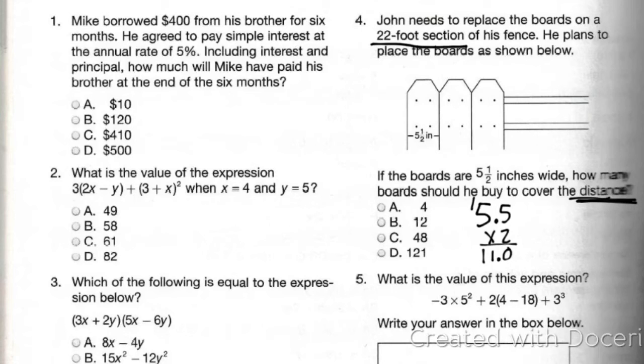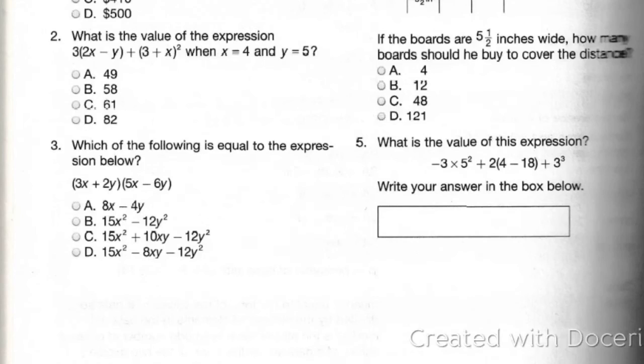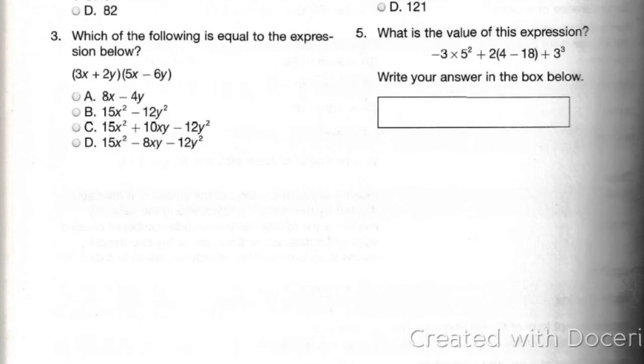So 5.5 times 2 is 11, or 5.5 plus 5.5 is 11. So that's two of them. Two 5.5s, or 5 and a halfs, is 11. Not multiple choice. So you've got to trust yourself a little bit with it. What is the value of the expression? Now this is like PEMDAS heavy right here. We have negative 3 times 5 squared plus 2 times (4 - 18) plus 3 cubed. Pause the video now if you want to try it for yourself.